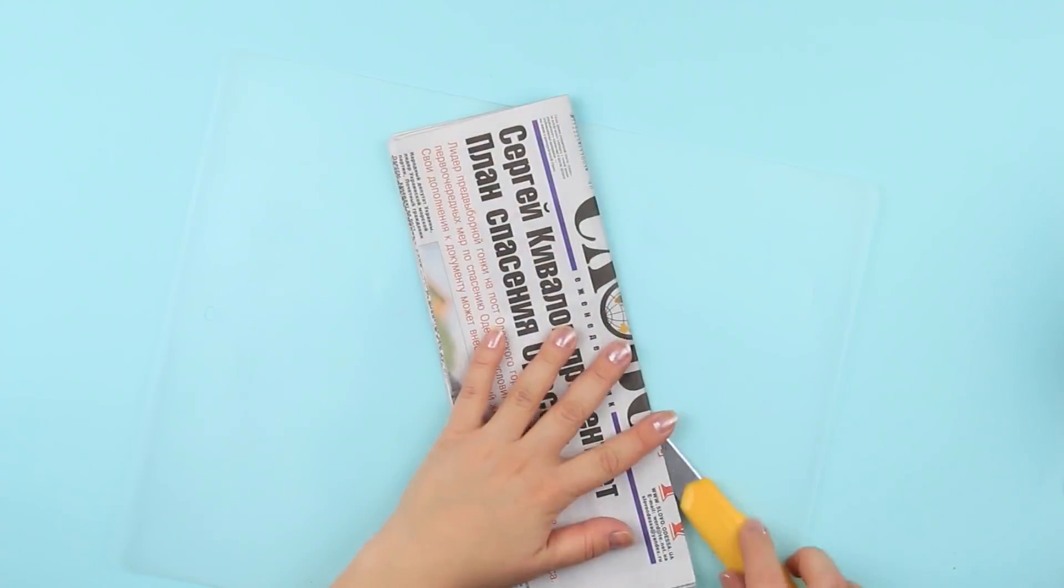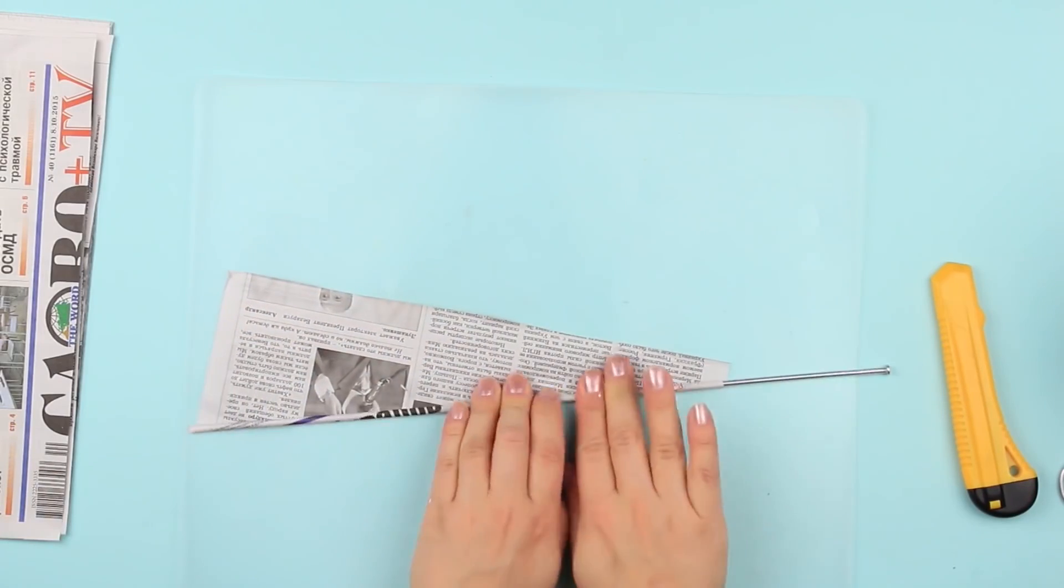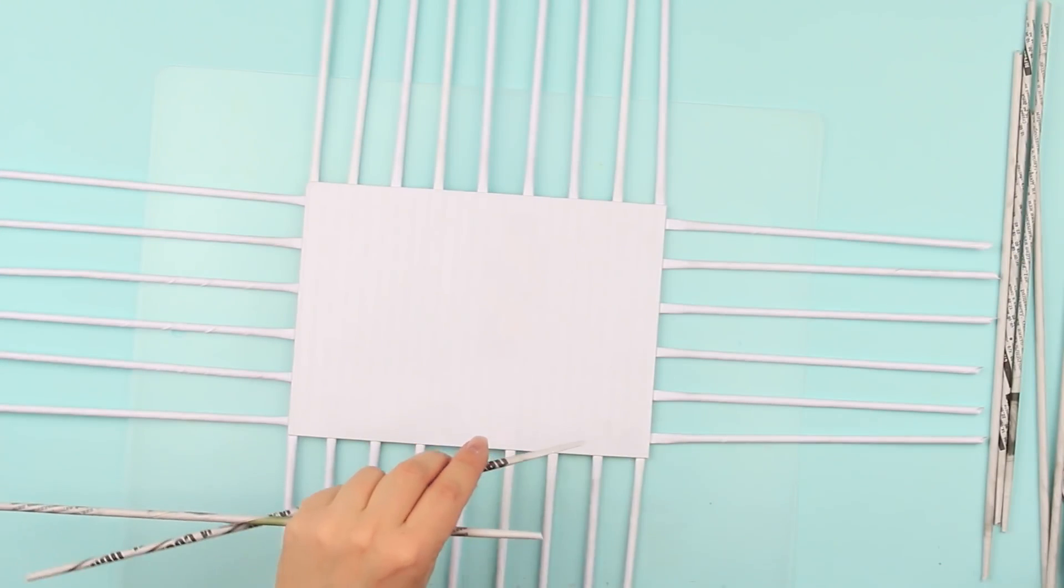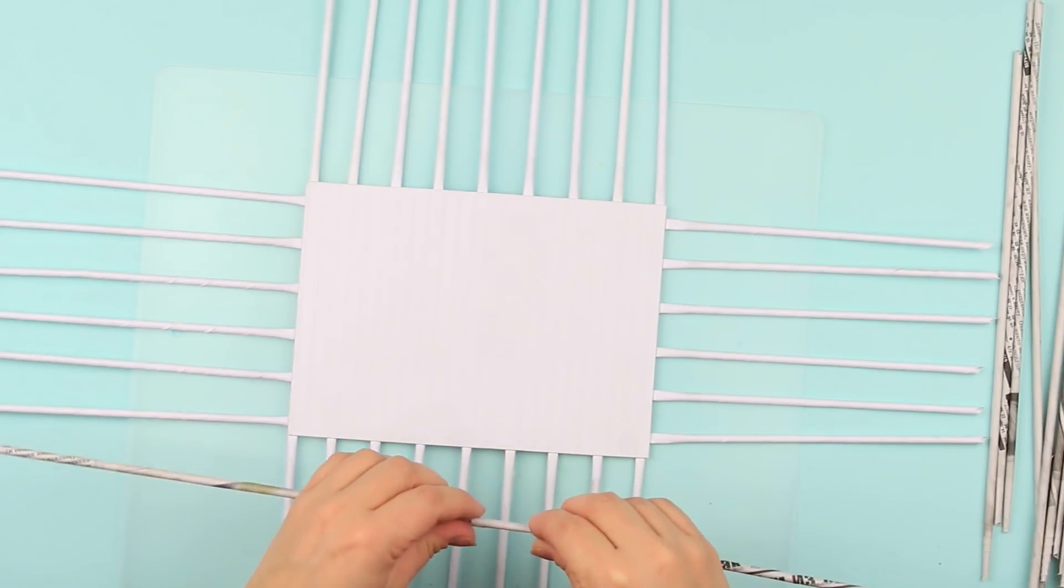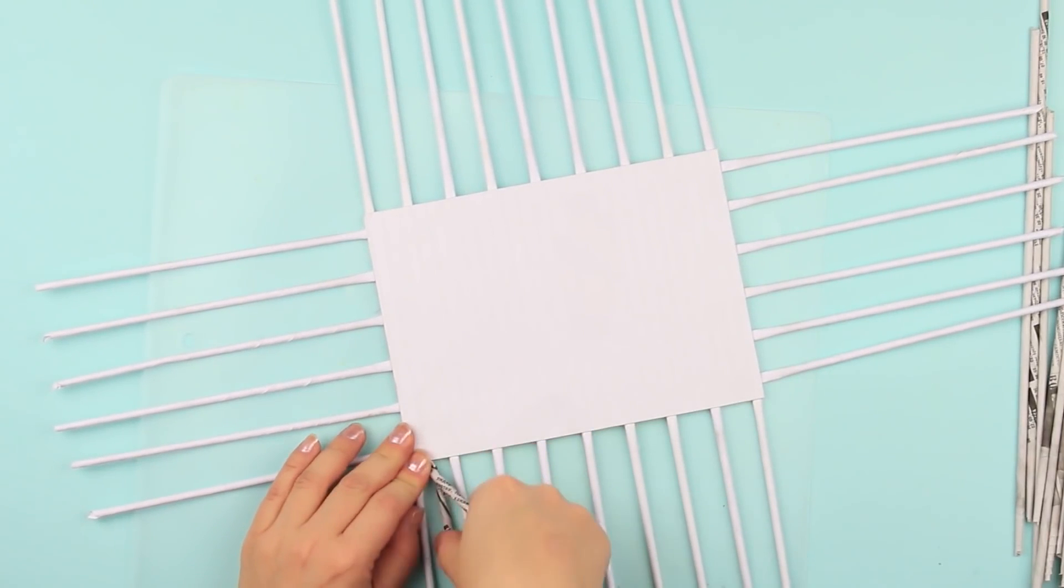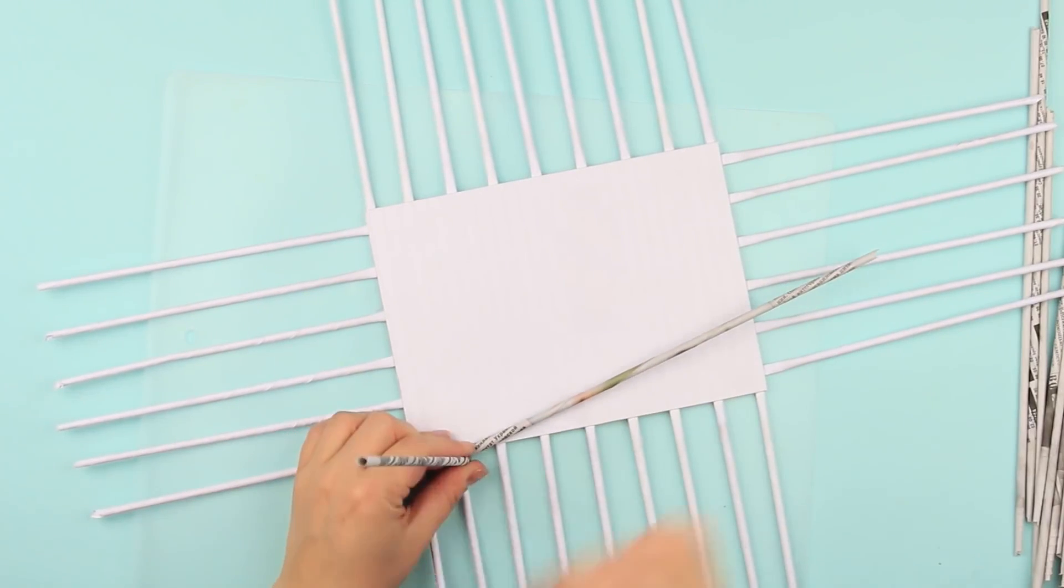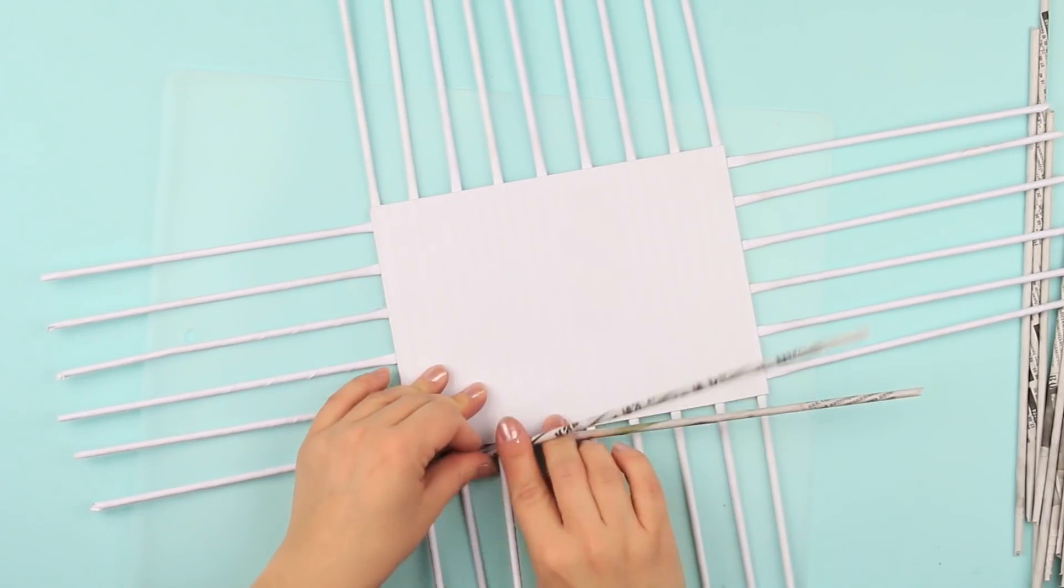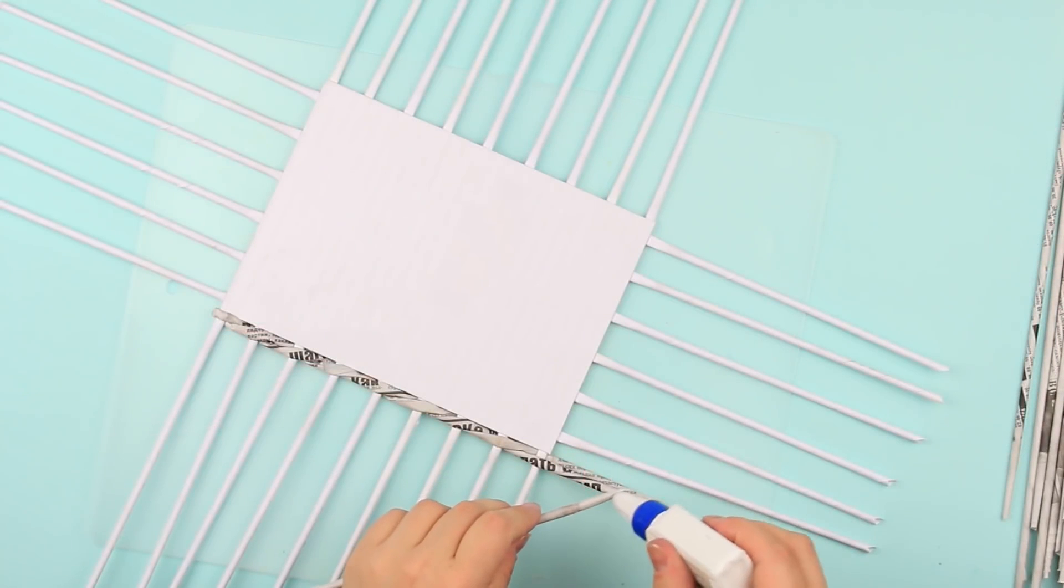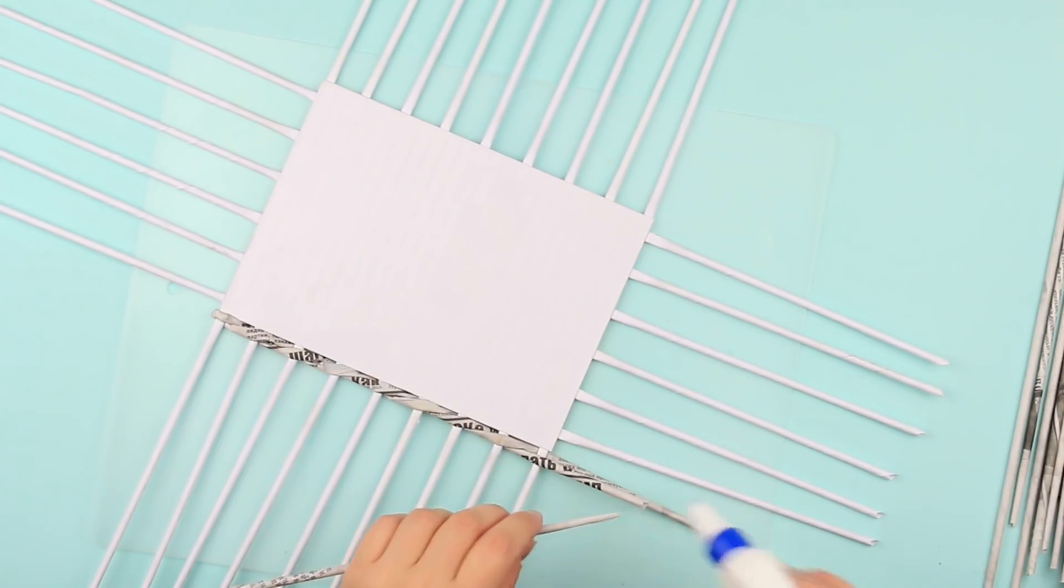Make newspaper tubes by cutting a folded spread into eight parts. Prepare the needed quantity and start weaving around the base. Join two tubes together by putting one glued end into another. Bend the long tube in half and weave around the frame starting with a corner. Make the tubes longer as far as needed and continue weaving.